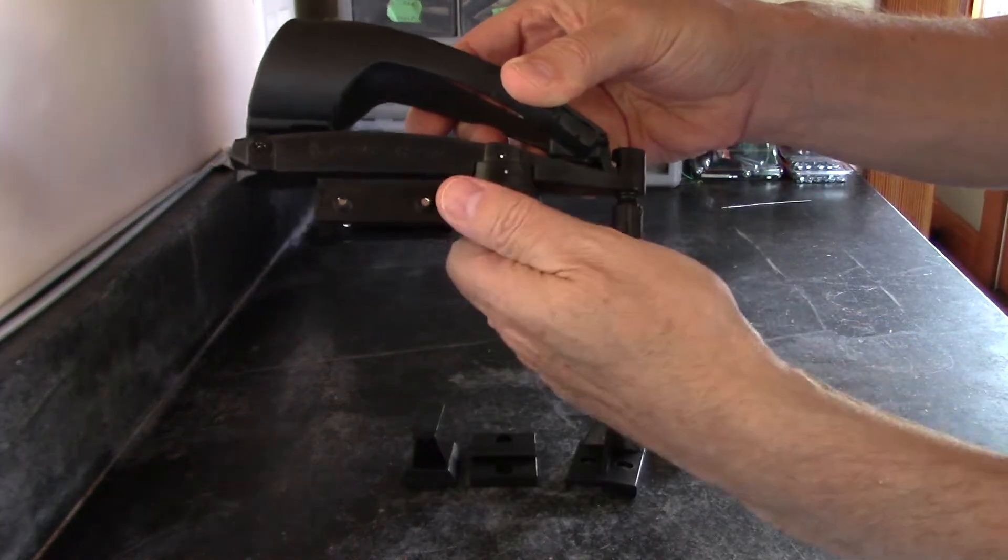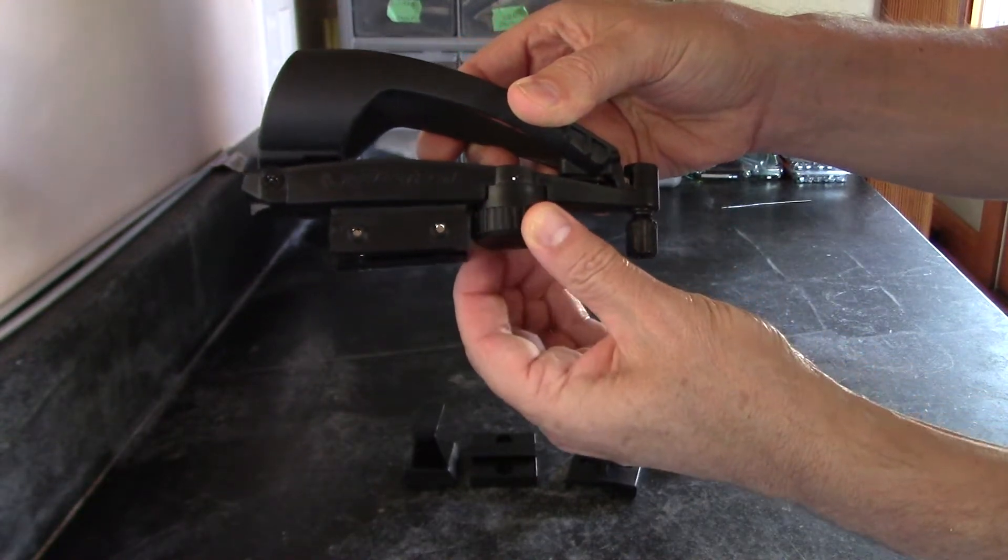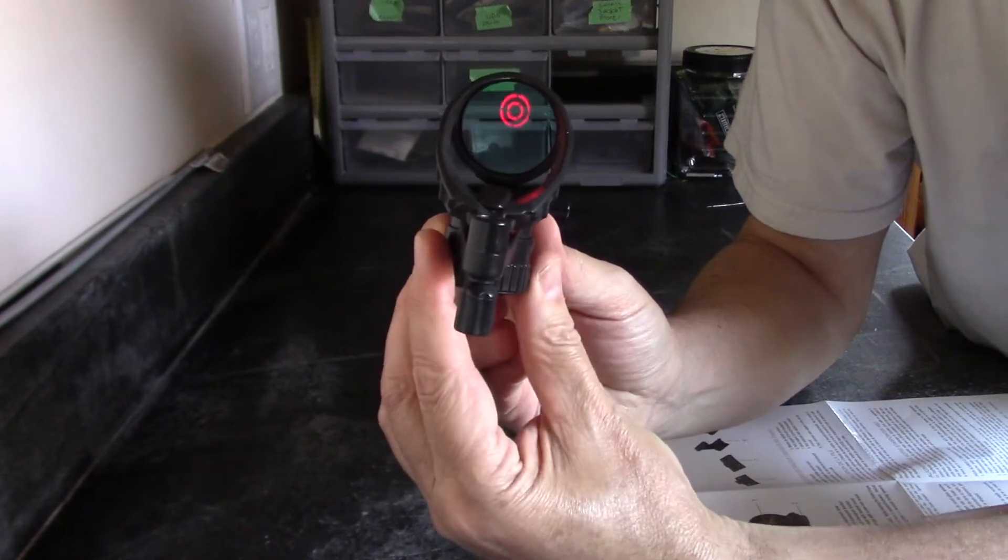Here's the on-off switch. And as you turn it this way, the image will go brighter and brighter. So in the daytime you have to have it quite bright, but at night you can turn it way down.